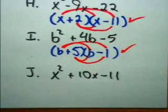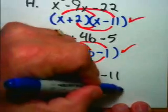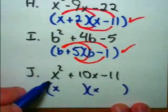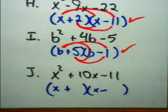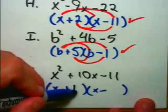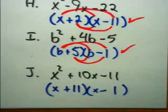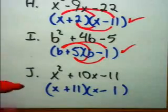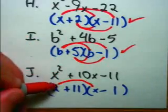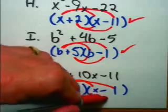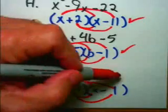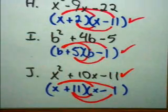Now, J, the last one. X times X will give us X squared. We need a positive and a negative to get a negative 11 there. And I'm thinking 11's prime number, 11 times 1. 11 minus 1 is 10. So, 11 and negative 1. Once again, it's only a potential answer until we've checked it out. X times X is X squared. Minus 1X plus 11X. Negative 1X plus 11X is positive 10X, just like we need. And positive 11 times negative 1 is negative 11. And we can be certain that that's the correct answer.